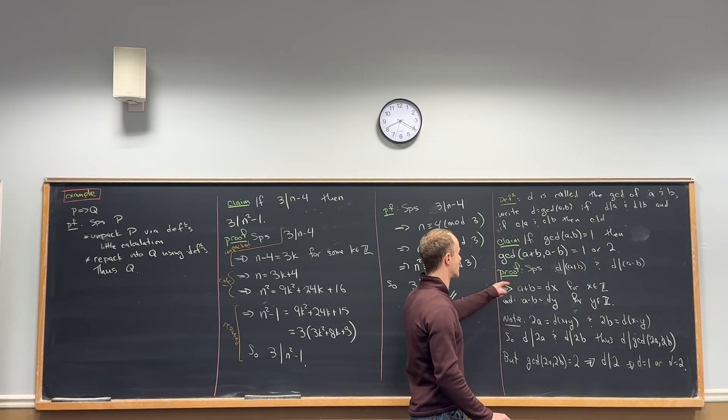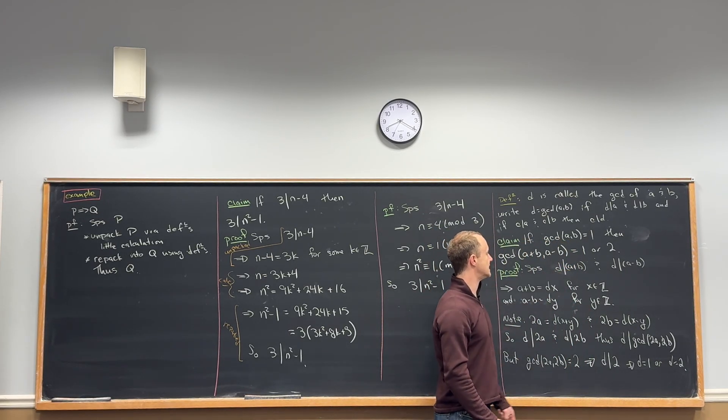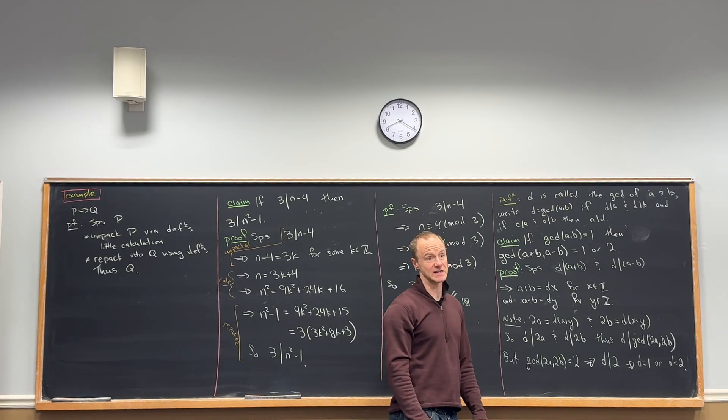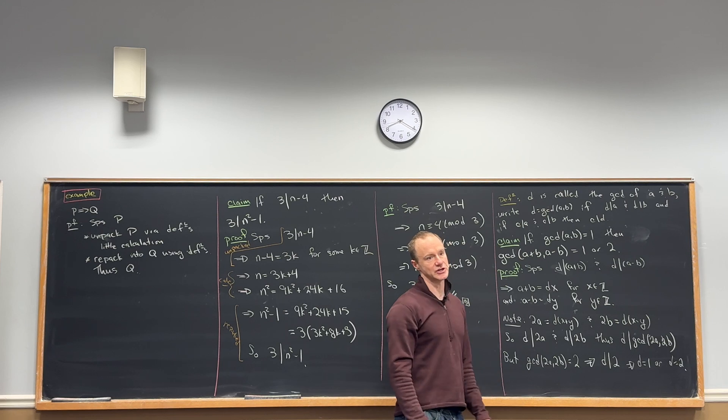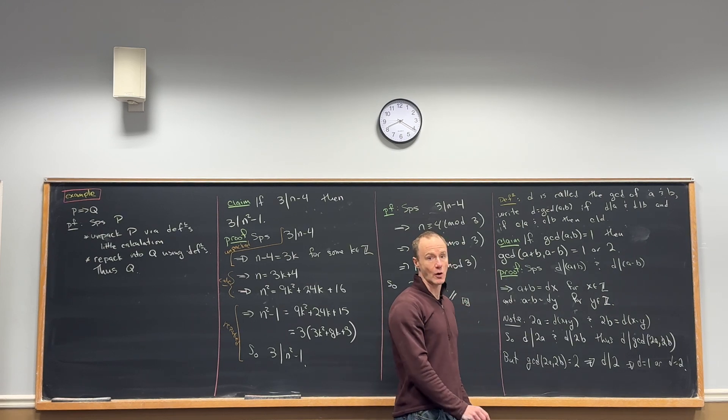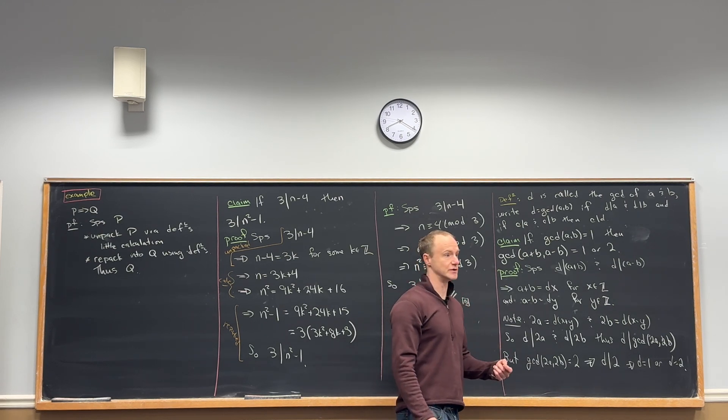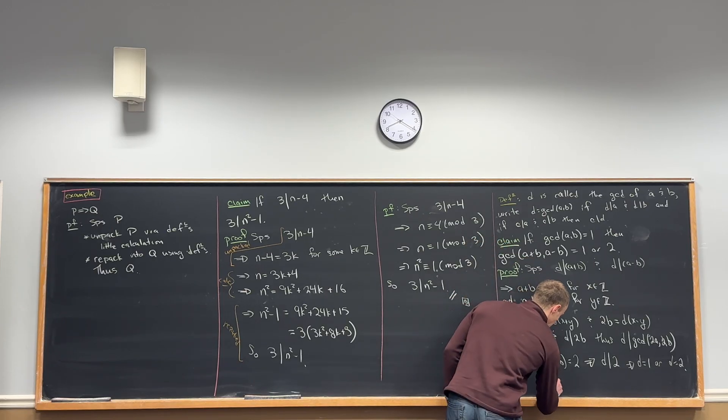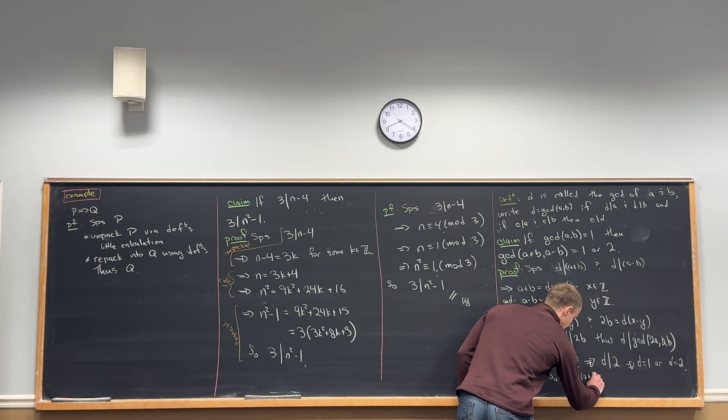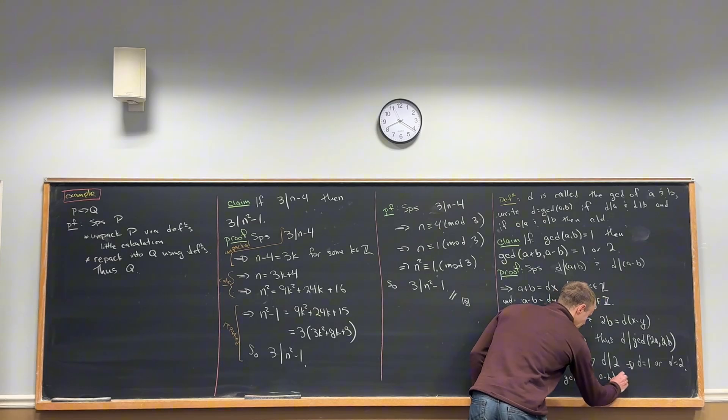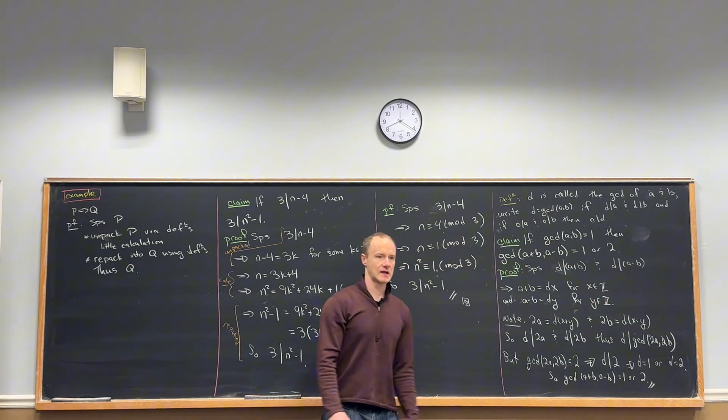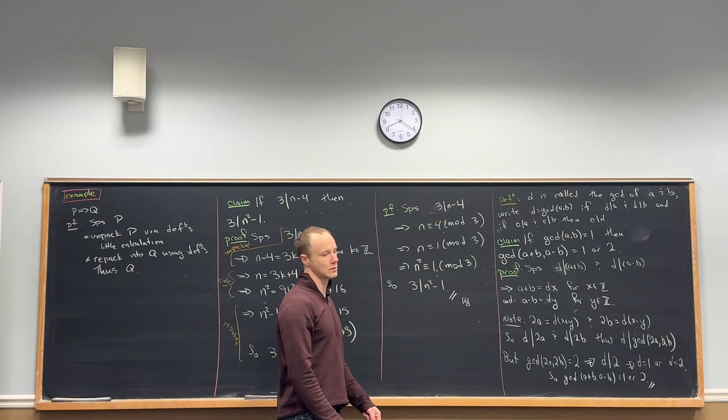But check it out way up here. We saw that D divided A plus B and D divided A minus B. So the only thing that divides both is 1 or 2. But if the only thing that divides both is 1 or 2, then that means that that's the GCD. So the GCD of A plus B, A minus B equals 1 or 2. Cool, huh?